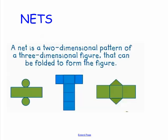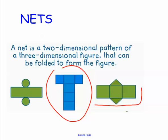Basically, I'm unfolding that shape. If you look at this shape, this is obviously going to be a square — if I were to fold it back up, it's going to be a square.